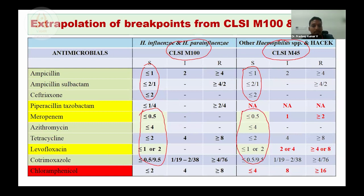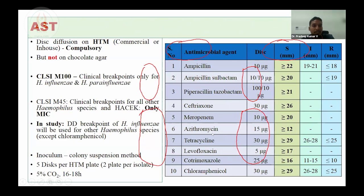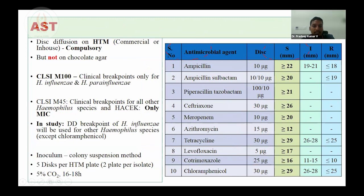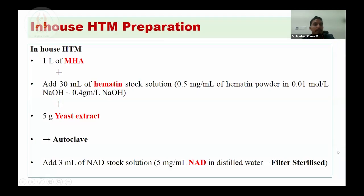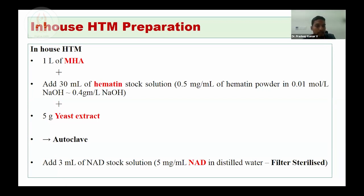Extrapolation is not possible for chloramphenicol. For other Haemophilus species and HACEK group, nine antibiotic discs must be performed — that is, all except chloramphenicol — and the results can be extrapolated. For Haemophilus test medium preparation, either commercially available ready-made plates can be procured or in-house HTM can be prepared as clearly described in the CLSI M100 document.